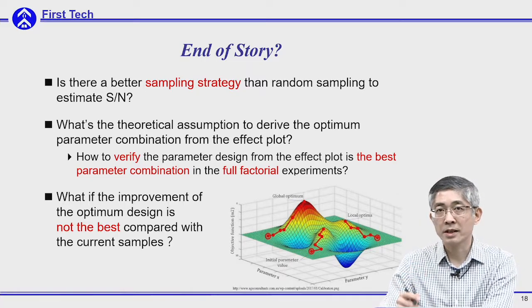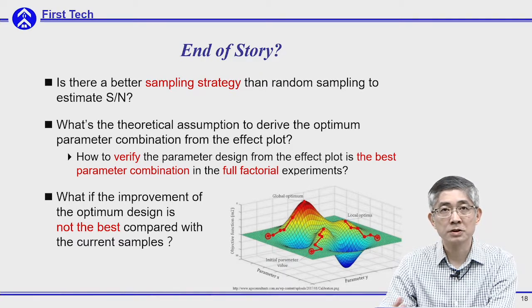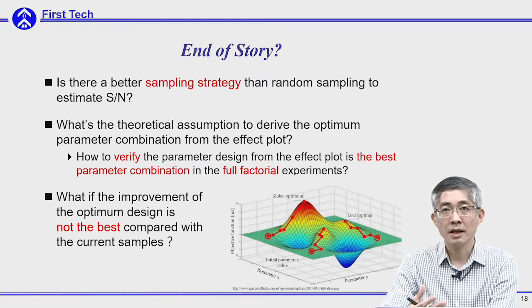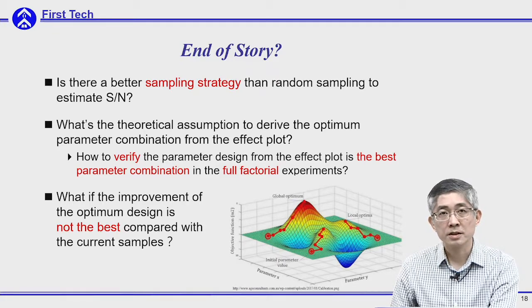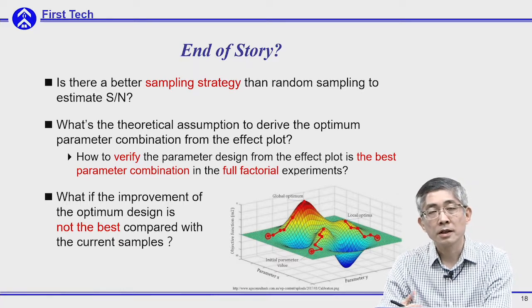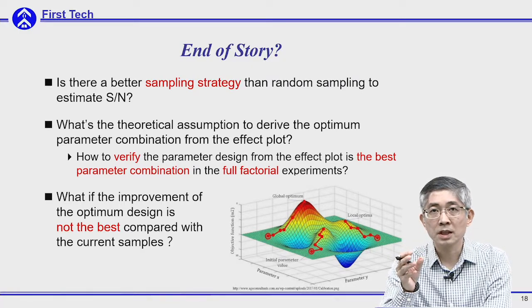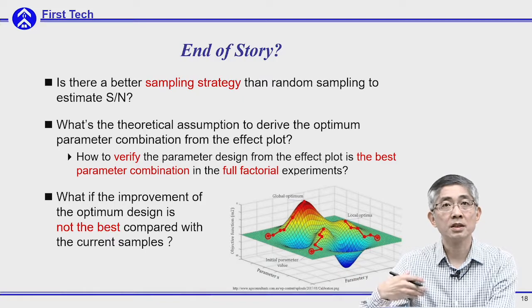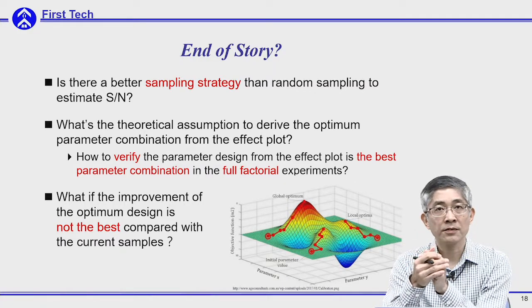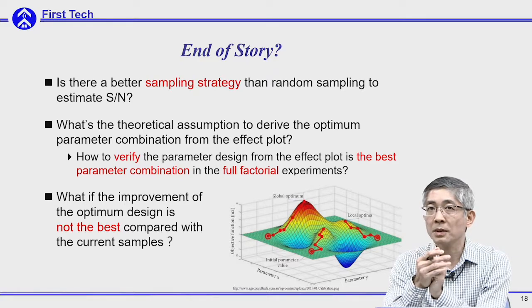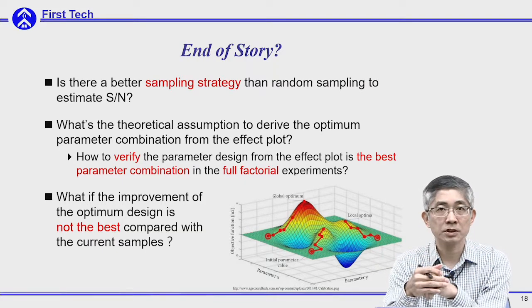As mentioned, we are using random sampling. However, random sampling usually requires a lot of samples in order to get a correct estimation of the mean and standard deviation. Is there a better sampling strategy than random samples? Since the output distribution is due to the influence of noise factors, during the sampling period you cannot assure that all the noise factors will be accounted for. So in real applications, the mean and standard deviation estimated from random samples may be different from the actual case, because your sampling period did not consider all the influences of the noise factors.